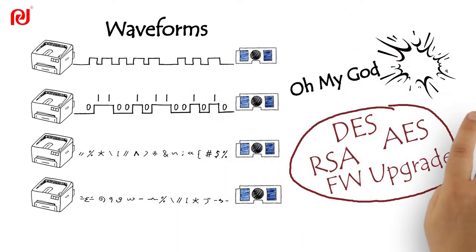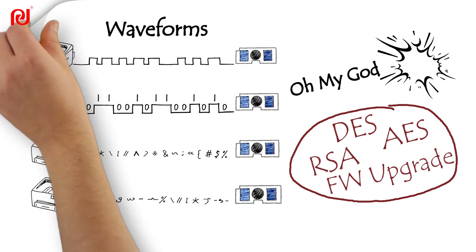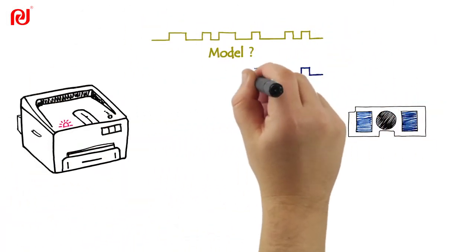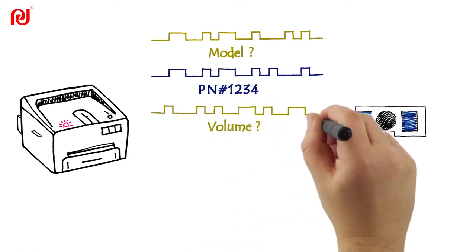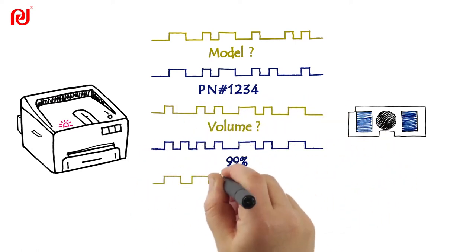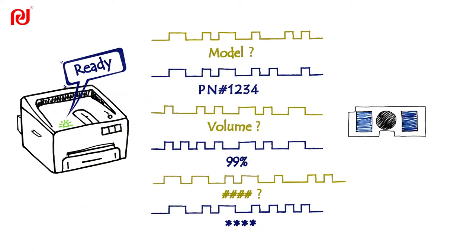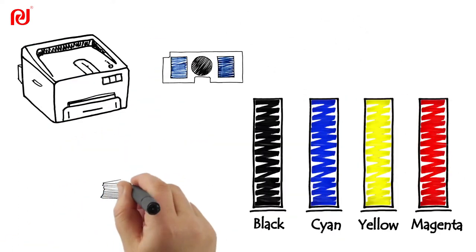After authentication pass, printer continues to read out data such as brand, model number, remaining volume from consumables chip. When all data matched, the printer will be ready to work. While printing, the capacity bar will gradually drop and the changeable data like pages counter and remaining volume will be continuously updated.